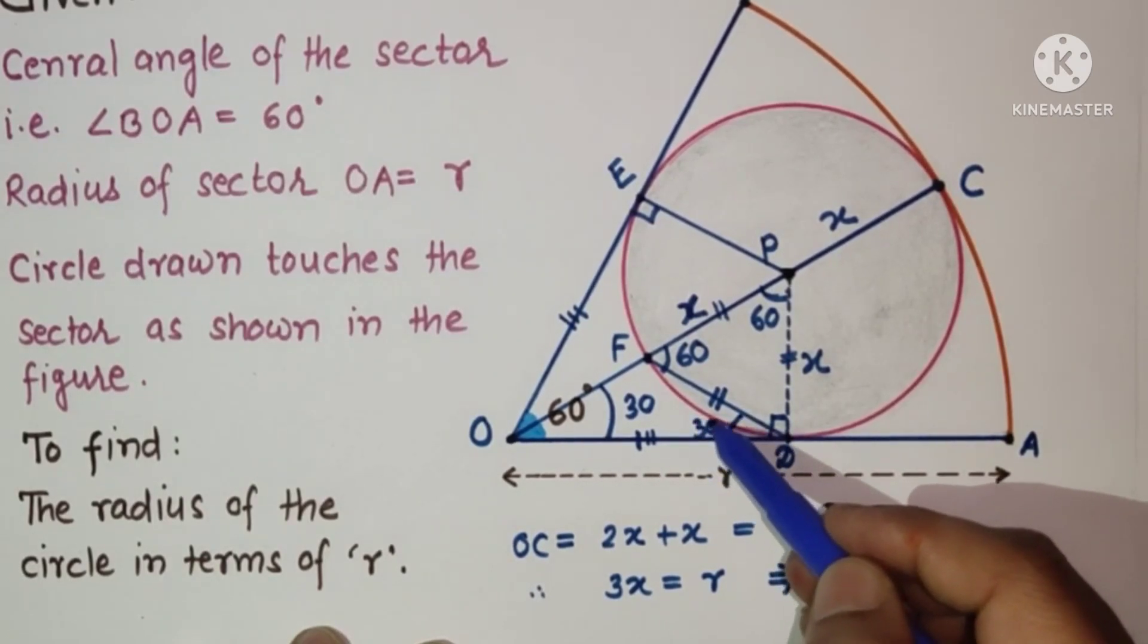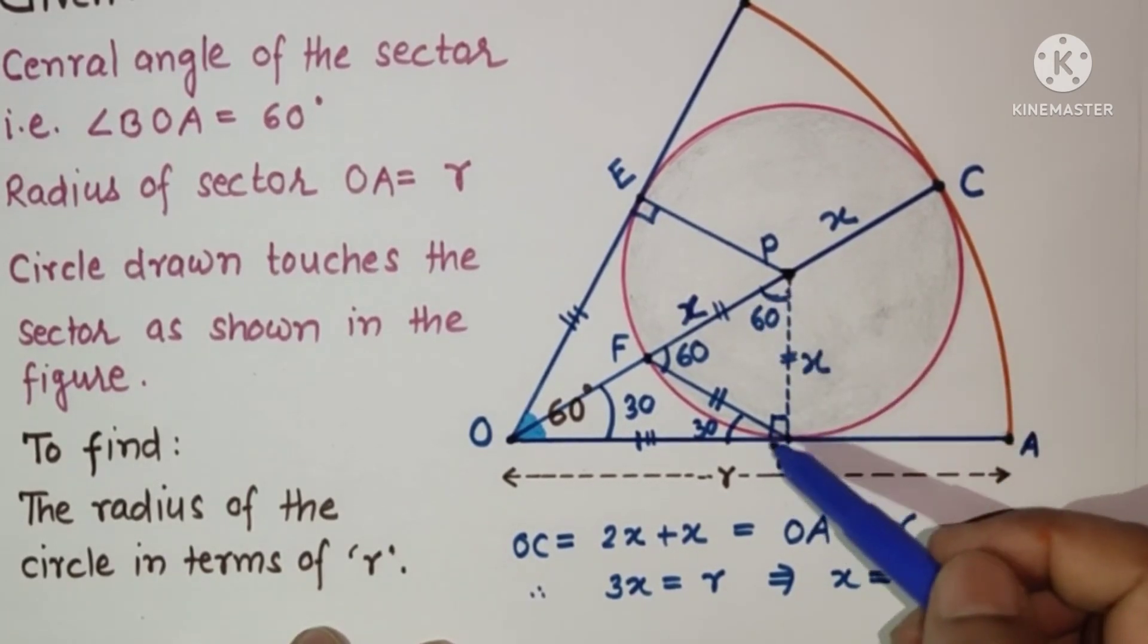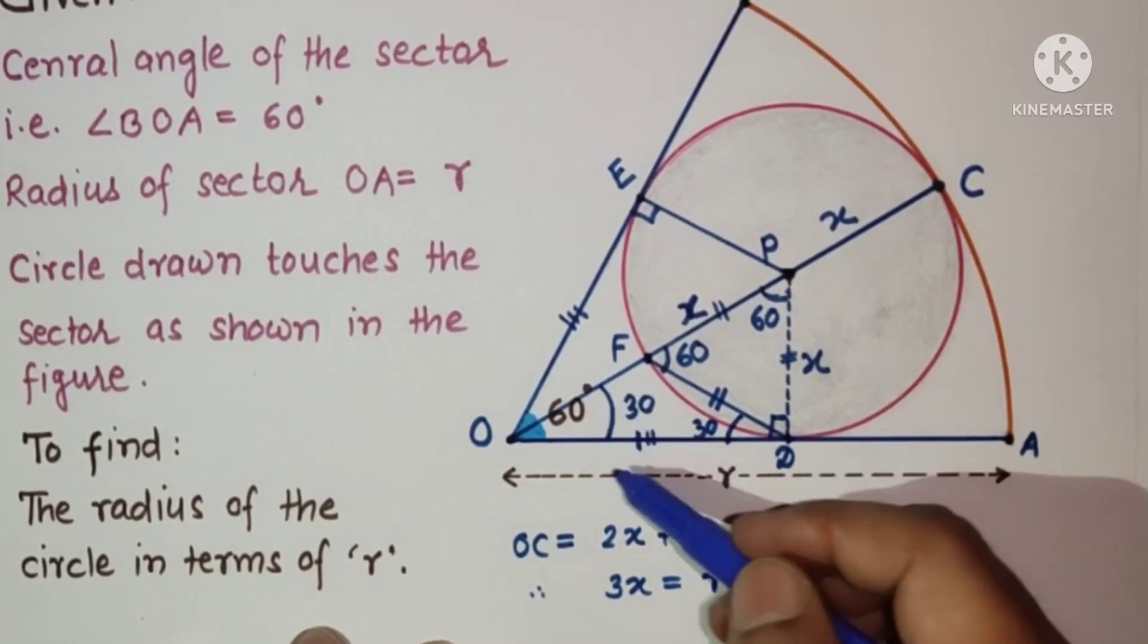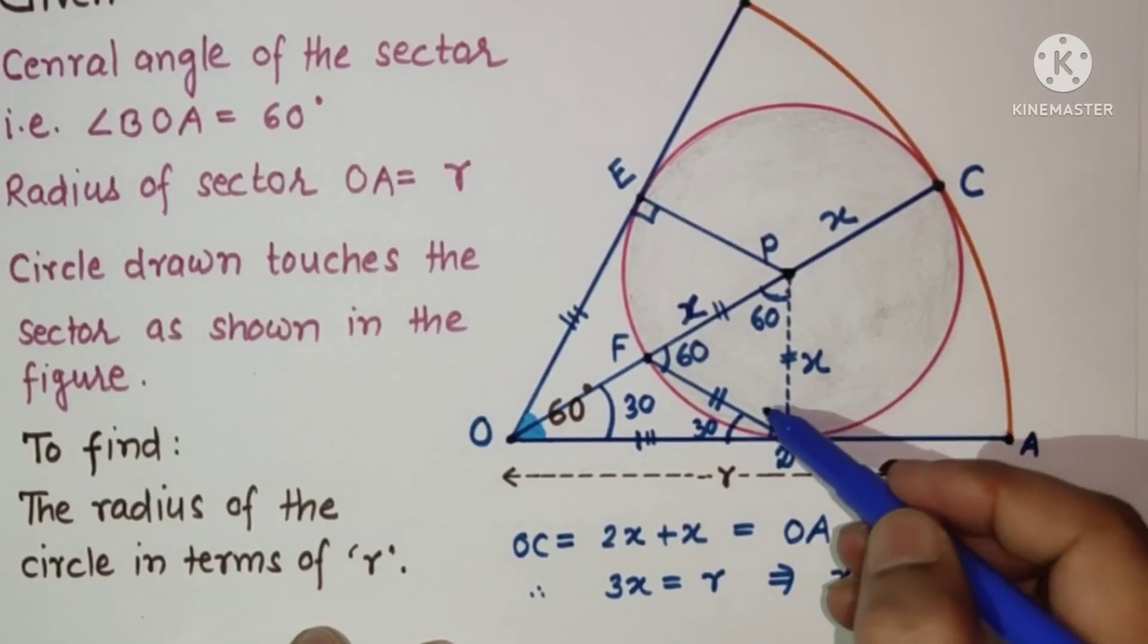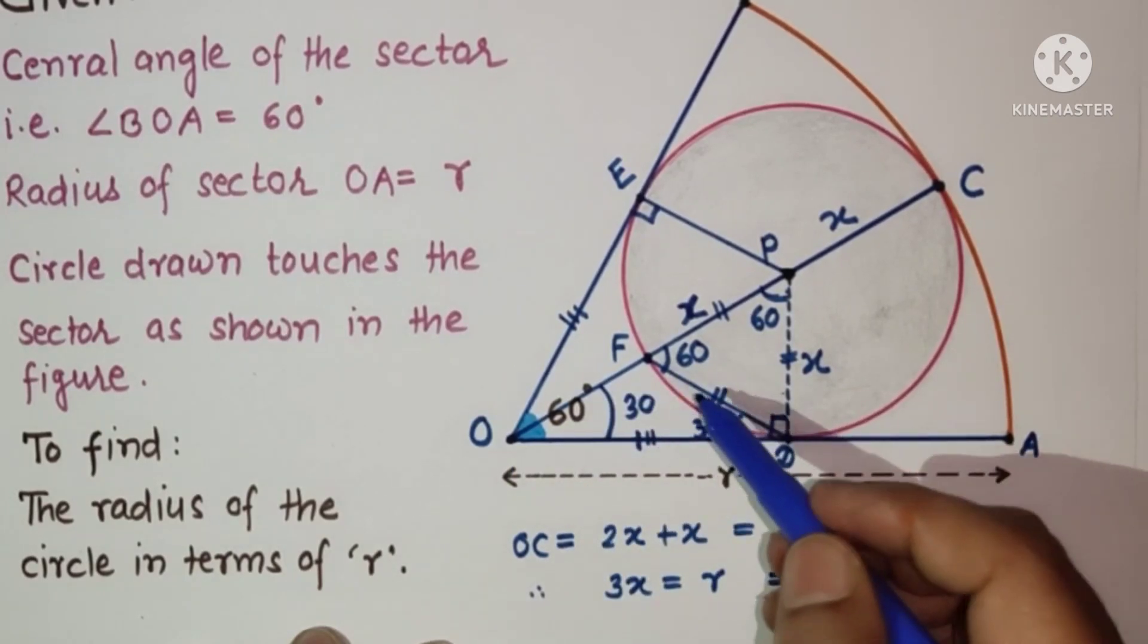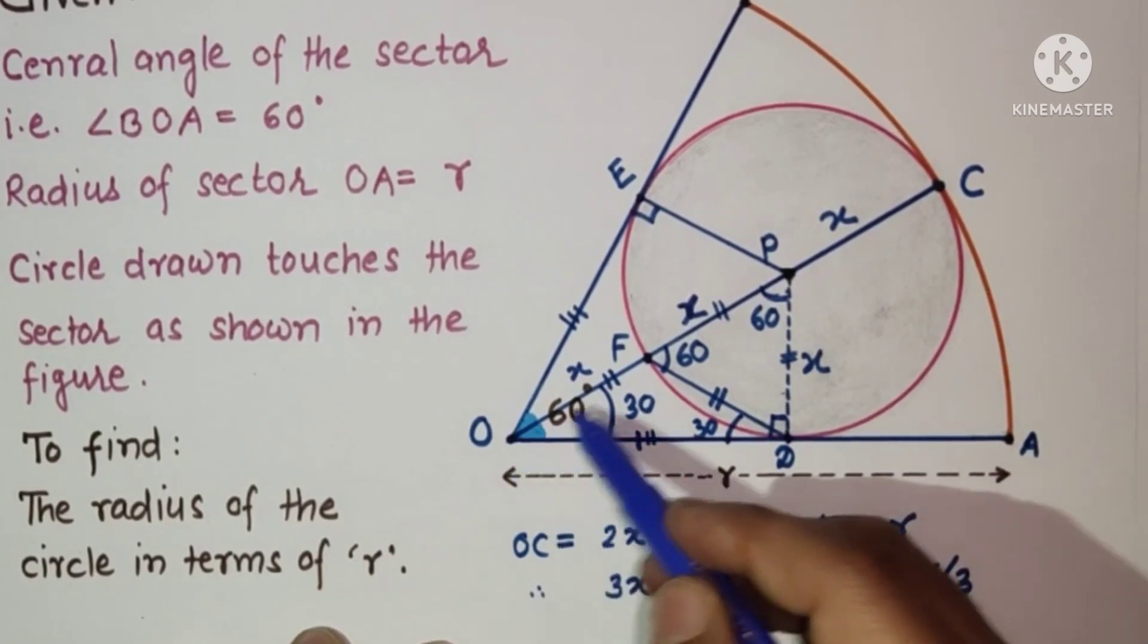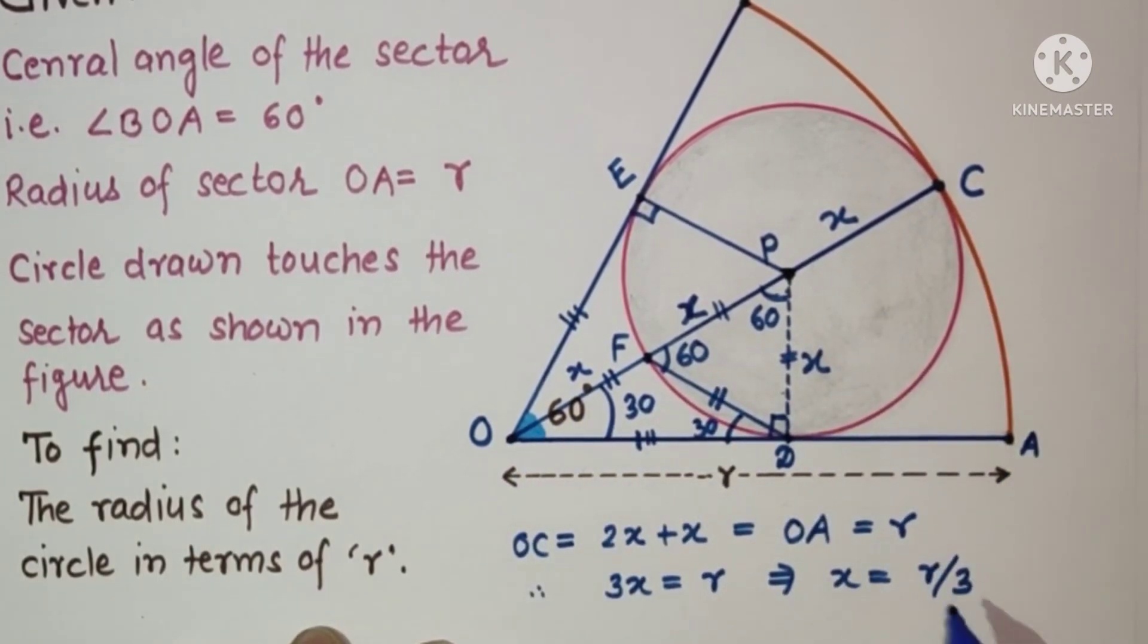If this is 30, or we can say this is 60, this is 90, this is 30. If this is 60, then this is 30, 30, 30, so it means it is an isosceles triangle. So this will also be X, X, X. So 3X is equal to OA, which is R, so X is R by 3, and this is the answer.